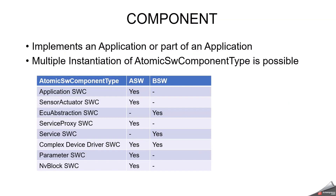A software component carries out an application. It implements an application or part of an application, and multiple instantiations of an atomic software component type are possible. The types of software components include: application software component (placed in ASW), sensor actuator software component (ASW), ECU abstraction software component (BSW), service proxy software component (ASW), service software component (BSW), complex device driver software component (ASW and BSW), parameter software component (ASW), and NV block software component (ASW).